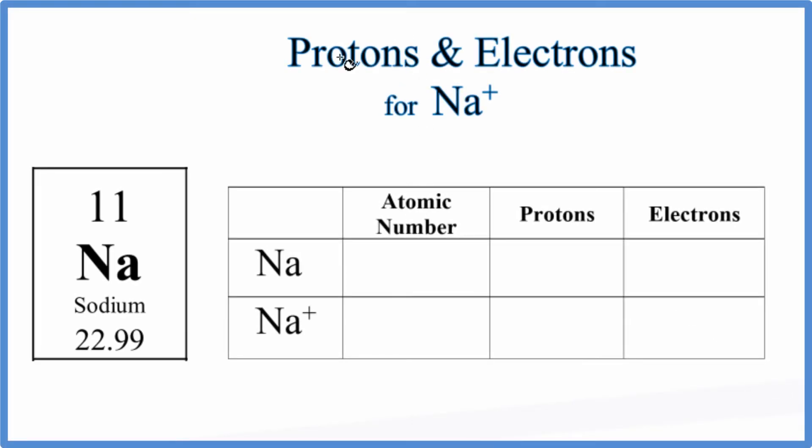In this video we'll find the number of protons and electrons for the Na plus ion. This is the sodium ion. The first thing we should do is find neutral sodium on the periodic table. We know it's neutral because there's not a negative or a positive sign after it.